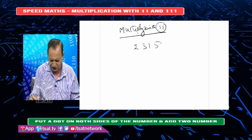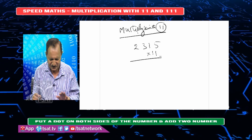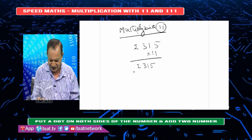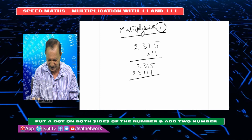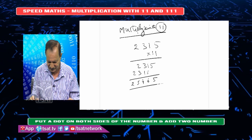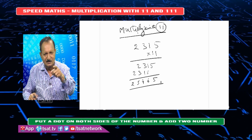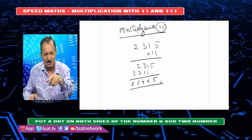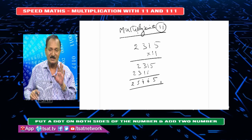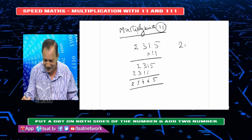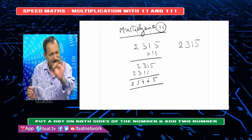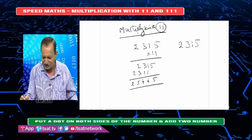Let's take 2, 3, 1, 5 into 11. This is my procedure — speed math. How easy, how happy, how easily you can do it. Simply we will write the answer, that's all. That is the greatness of speed math. So: 2, 3, 1, 5 into 11.